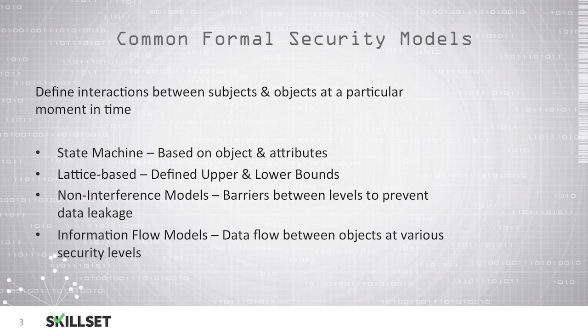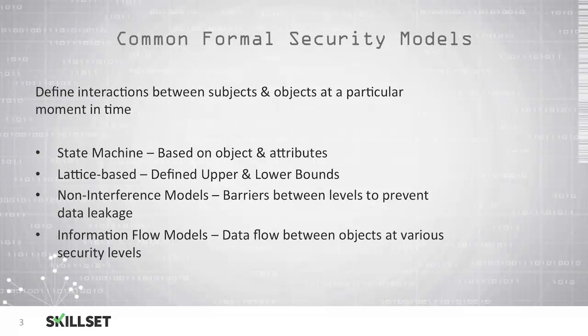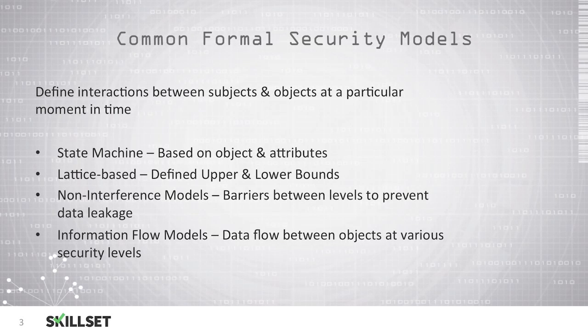There are some common security models that we can use to make sure that the interactions between our subjects and our objects are acceptable and are based on our security policies. One example is a state machine model. In this model, access is based on objects and their attributes. We also have the lattice-based model where we define upper and lower bounds. The non-interference model where we create barriers between levels to prevent data leakage, and our information flow model where data flows between objects at various security levels.